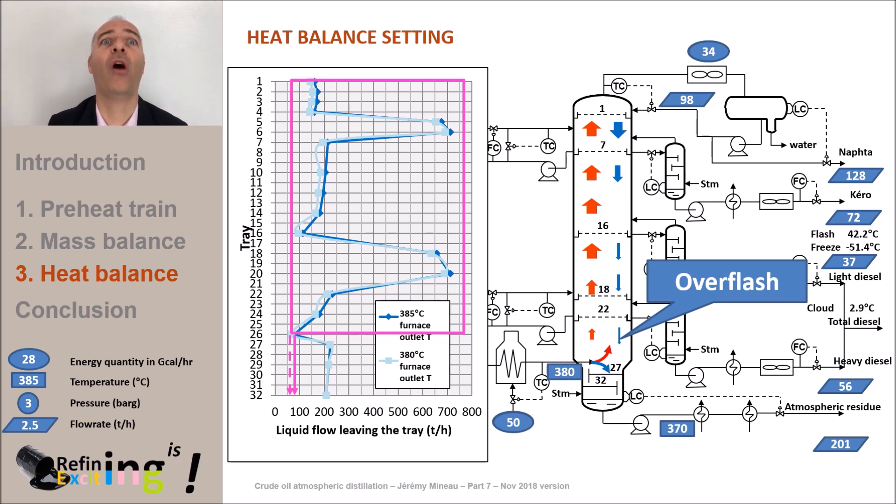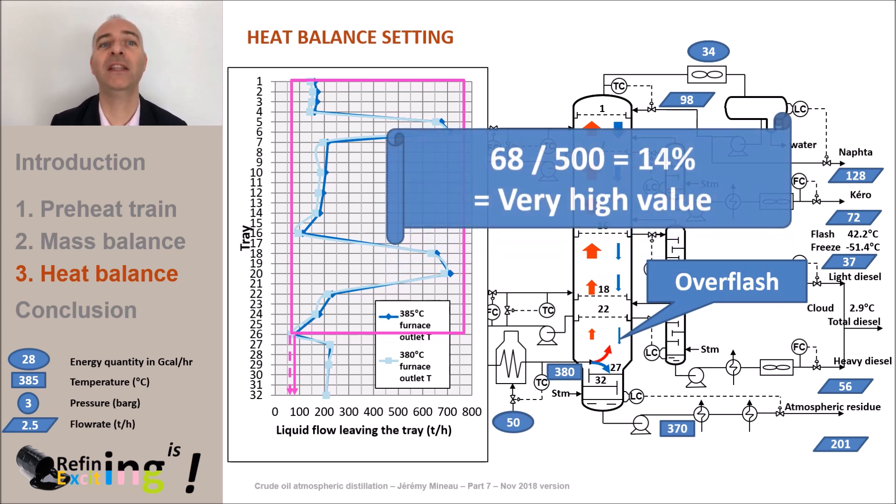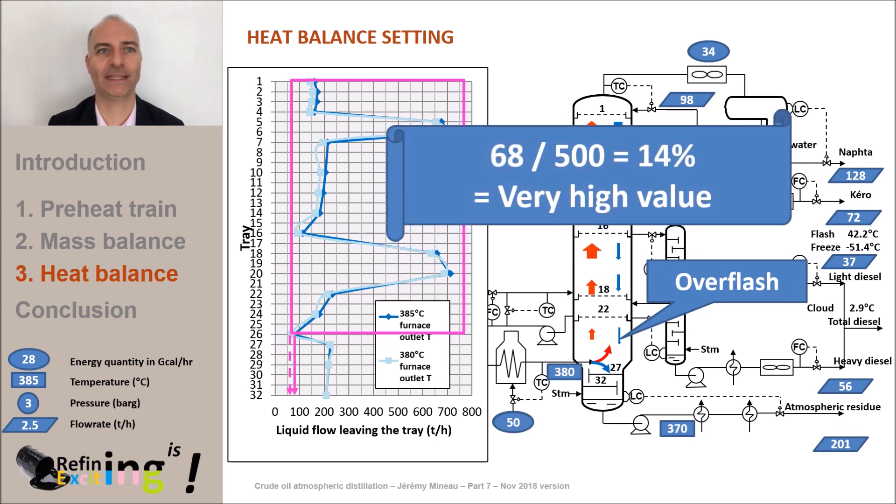This time, to choose the right amount of overflash, it is typical to compare this overflash flow to the feed throughput. In our case, we are at 68 tons an hour for 500 tons per hour throughput. It means 14 percent. This value is rather high since we typically target a value of 3 to 5 percent.